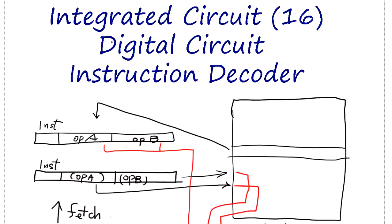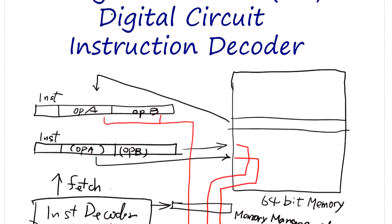Integrated Circuit 16: Digital Circuit Instruction Decoder. The instruction decoder is the state machine within the CPU.